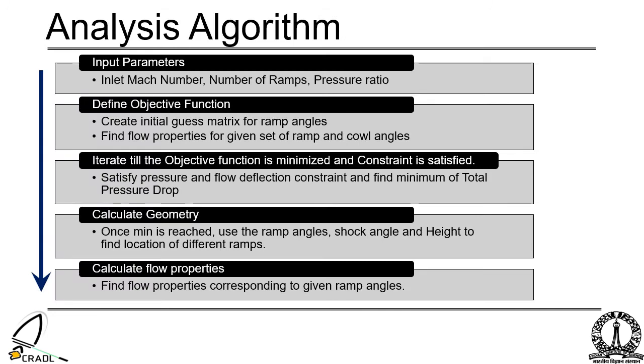The algorithm for intake optimization is summarized here. For a level cruise flight at fixed Mach number and number of ramps and cowls with desired compression ratio, the decision variables are the deflection angles which are calculated by gradient-based optimization method. Sequential gradient optimization toolbox in MATLAB was used for the calculation.